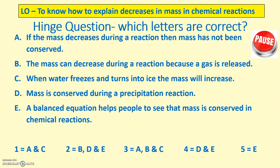The correct answer was two of B, D and E. Because B, when the mass can decrease during a chemical reaction because the gas is released, that is true. D, mass is conserved during a precipitation reaction. Yes, because a solid is formed, not a gas. And E, a balance equation helps people to see that mass is conserved in chemical reactions. Yes, because you can see how the elements are rearranged, but they are not changed.